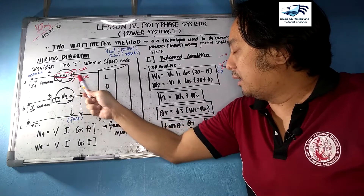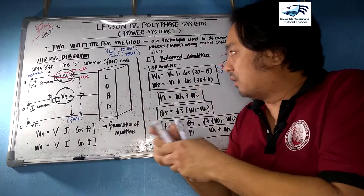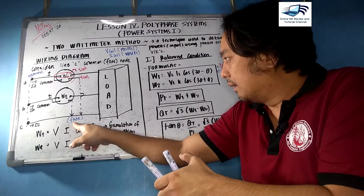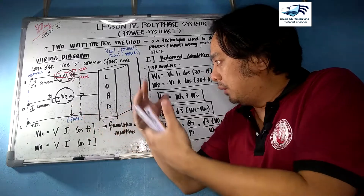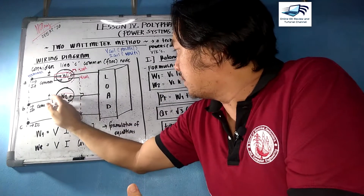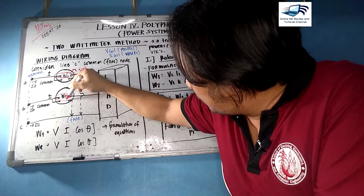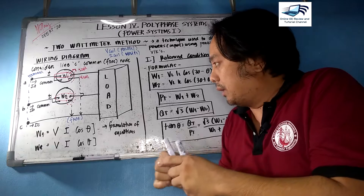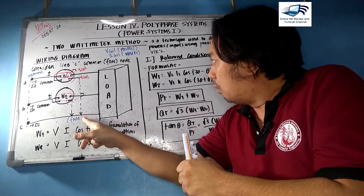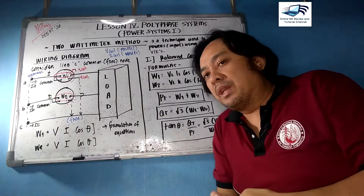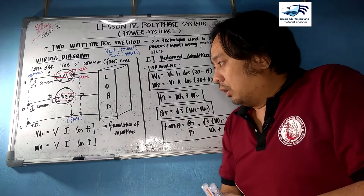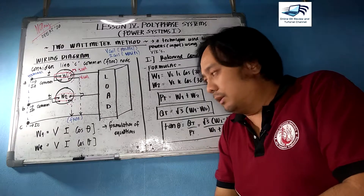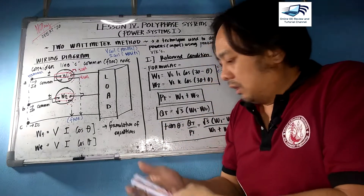The current coil is in series and the voltage coil is in parallel. Dependent on the reference, the voltage coil goes to the free node. For wattmeter 2, the same applies: the current coil is in series, and the voltage coil — the broken line — is in parallel, connected to the common or free node.